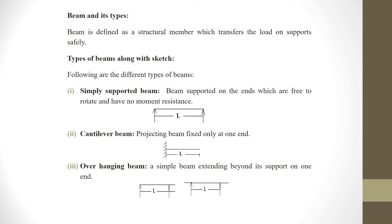We will see beam and its types. A beam is defined as a structural member which transfers load onto supports. We will see types of beams along with sketches. First is the simply supported beam: a beam supported on both ends which are free to rotate and have no moment resistance. This is the simply supported beam, as the beam is supported on both ends.